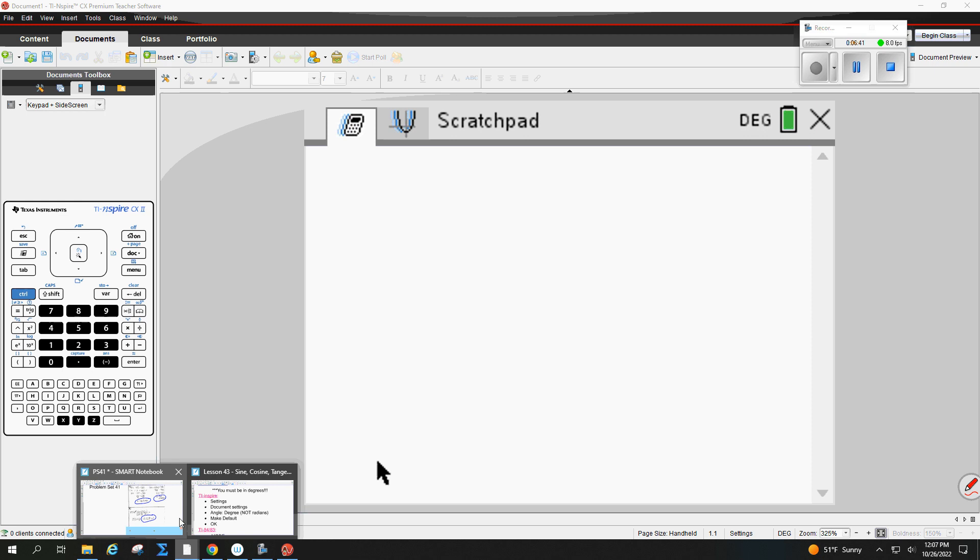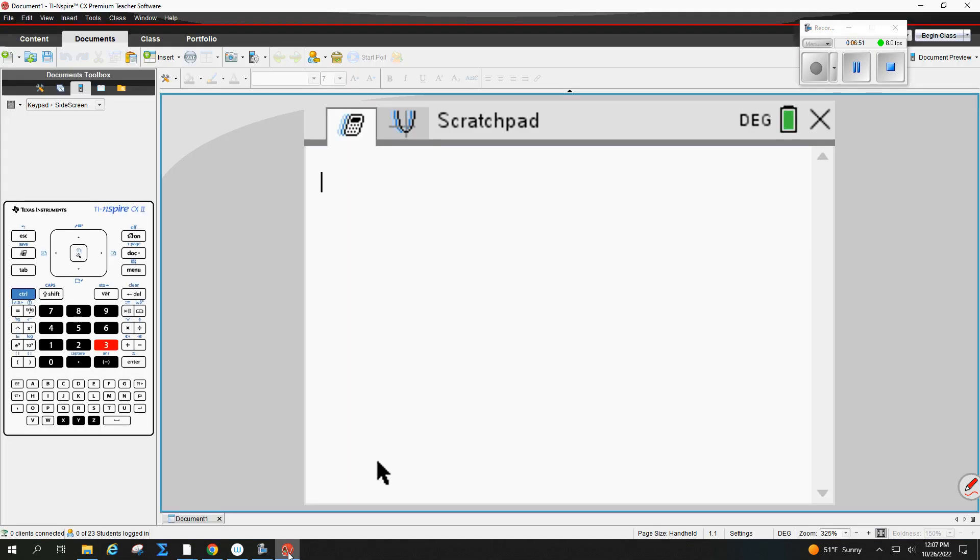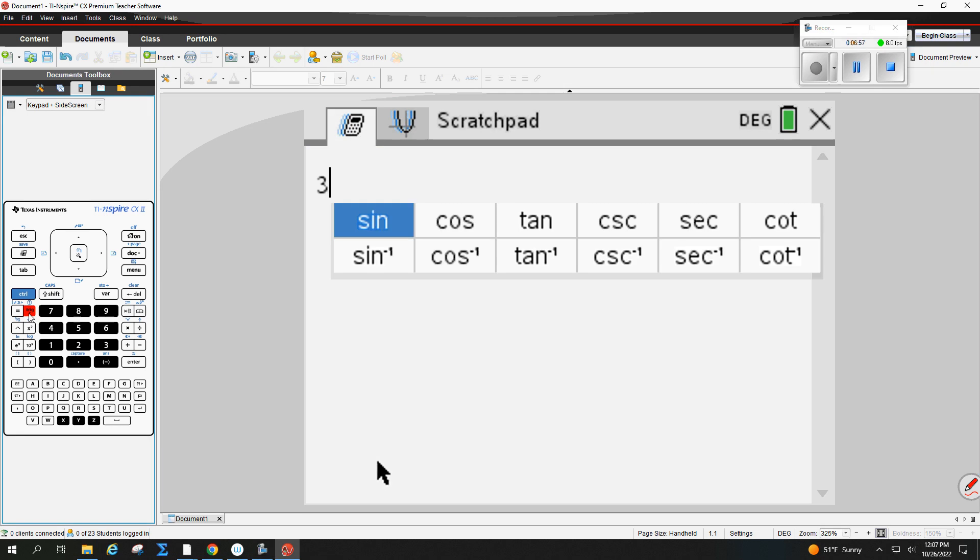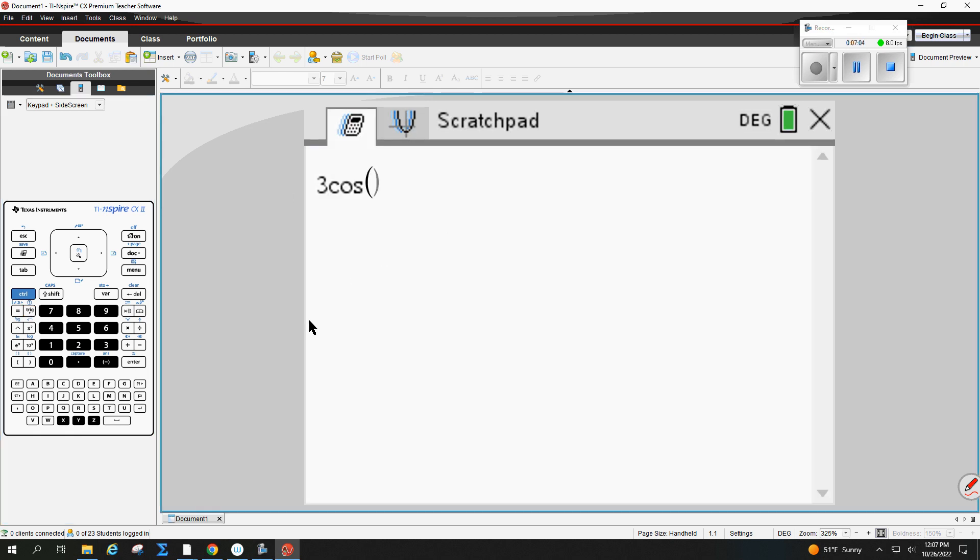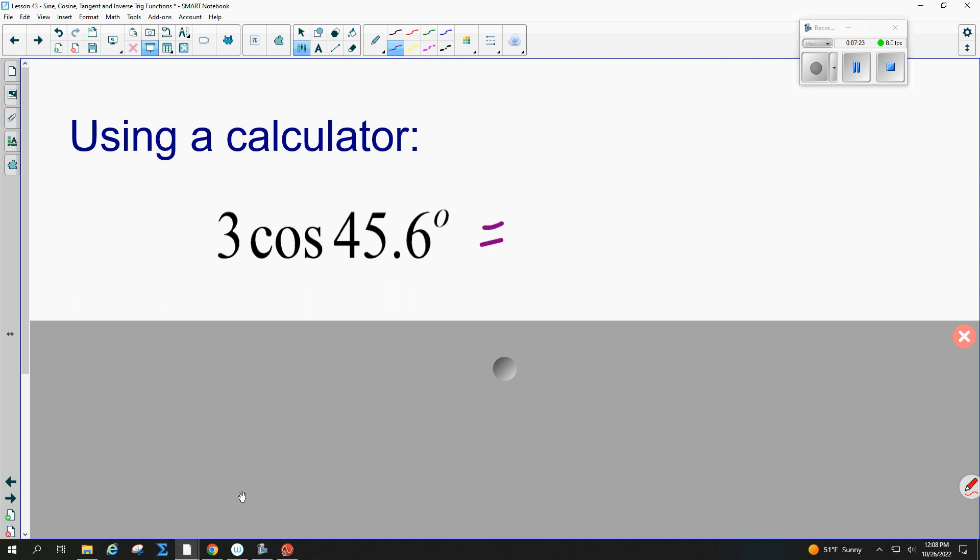So now we're just going to plug it in. This is super easy. So I'm going to do 3 cosine 45.6. This little button over here that says trig is where all your trig functions are. So it's on the left underneath control. You press trig, and then we just press cosine, not the one with the negative sign. And then we plug in 45.6. And you just write your answer down 2.099. Round to the third decimal place.